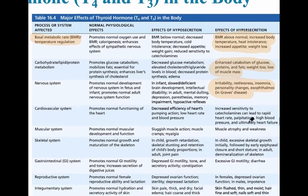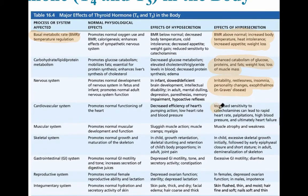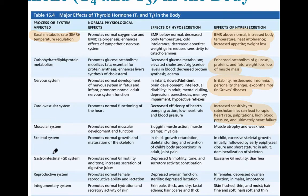For the cardiovascular system, there is increased sensitivity to catecholamines such as epinephrine and norepinephrine — basically adrenaline — causing palpitations and high blood pressure. This can be very damaging to the cardiovascular system. Other systems are also affected, including the muscular and skeletal systems.